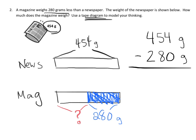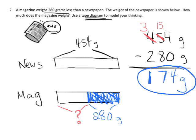Our strategy is subtraction: 454 grams minus 280 grams using the standard algorithm. 4 minus 0 is 4. 5 minus 8—we can't do that, so we regroup: the 4 hundreds become 3 hundreds and the 5 tens become 15 tens. 15 minus 8 is 7, and 3 minus 2 is 1. The answer is 174 grams, so the magazine weighs 174 grams.